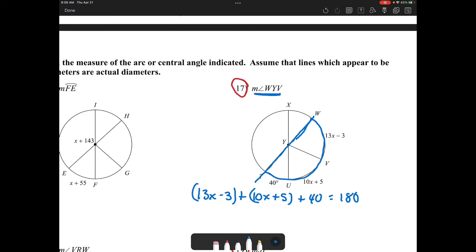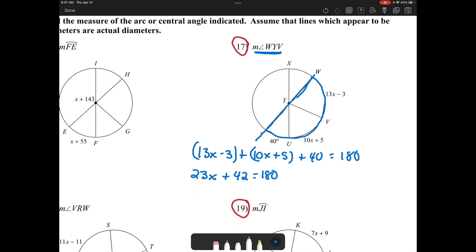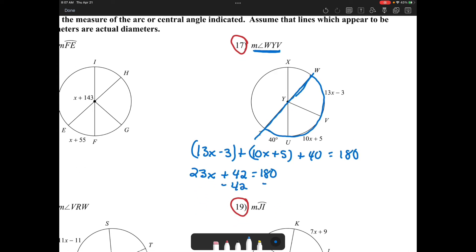So now I can solve for X. So I have 23X, and minus 3 and 5 is minus 2, plus 40, so plus 42 equals 180. Using my equation solving skills, I would subtract 42 from both sides and I would get 138. So I'll have 23X is equal to 138, and then I divide by 23, and I get X is equal to 6.